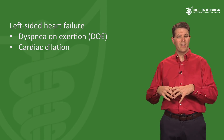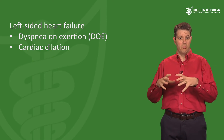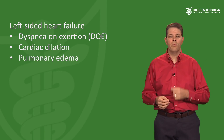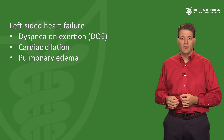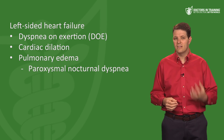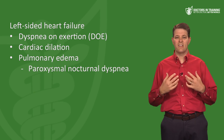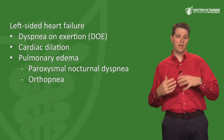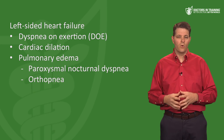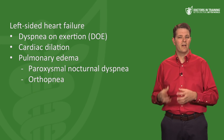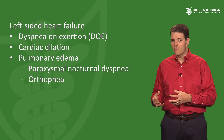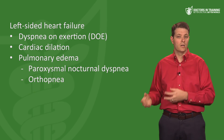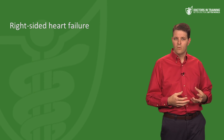Left-sided heart failure can also cause cardiac dilation because of greater ventricular end-diastolic volume — the heart gets bigger over time like blowing up a balloon. It can lead to pulmonary edema, paroxysmal nocturnal dyspnea (waking up at night gasping for breath), and orthopnea (shortness of breath when lying down that improves sitting up). When you see pulmonary symptoms in heart failure, think left-sided: L for left, L for lungs.